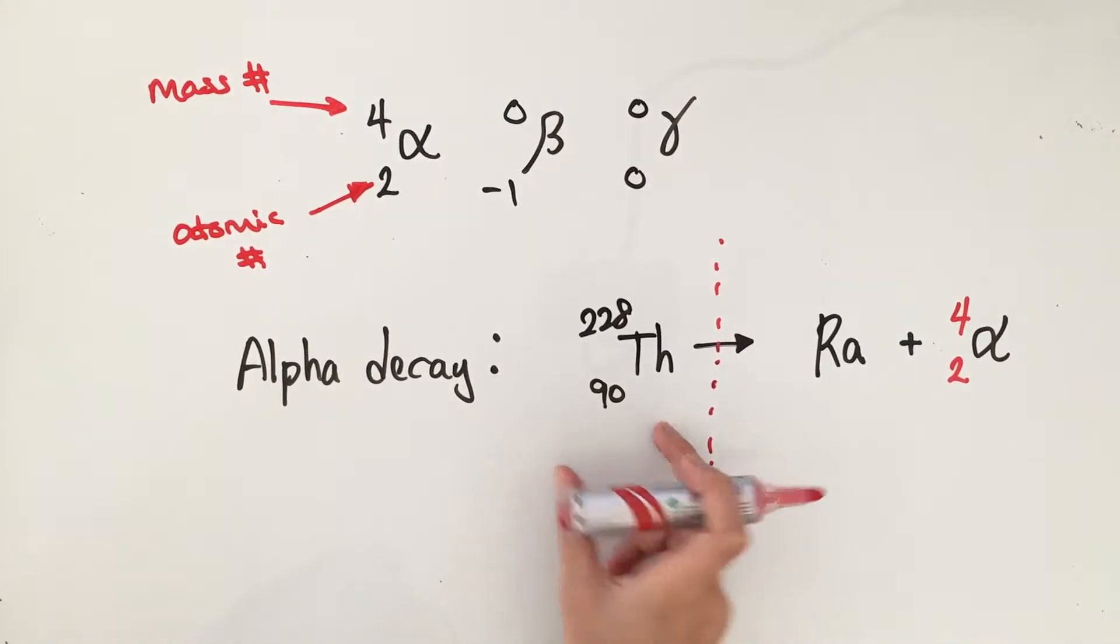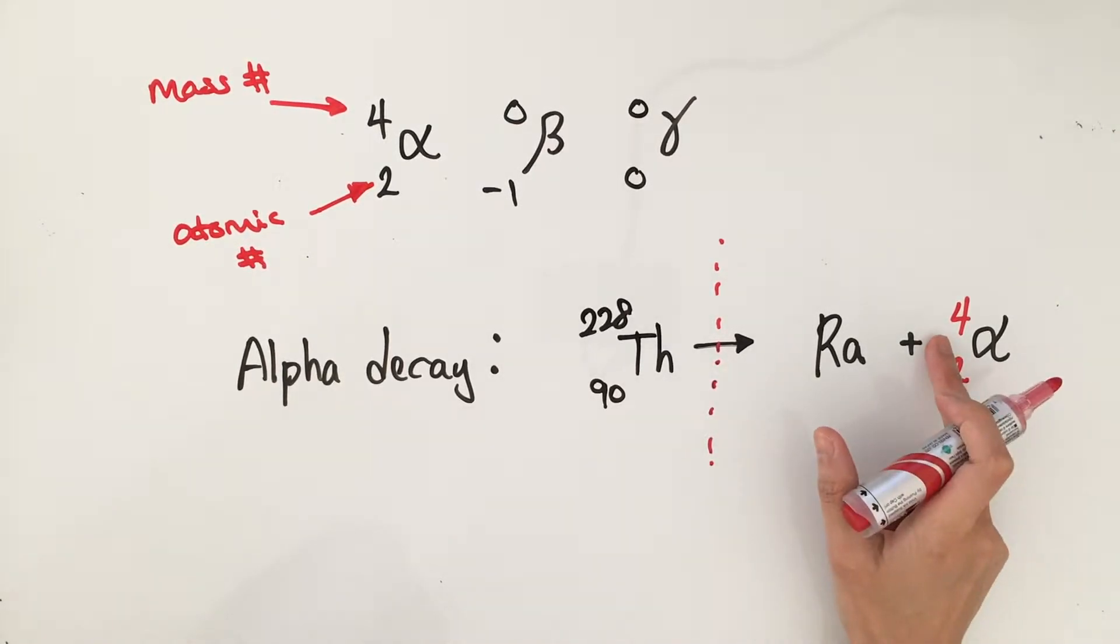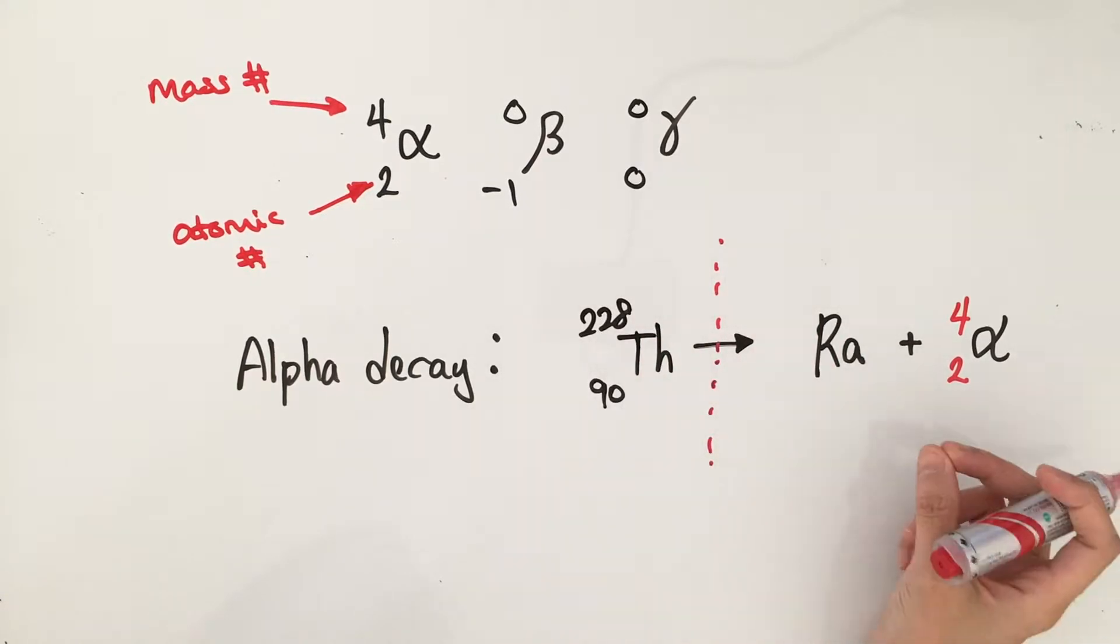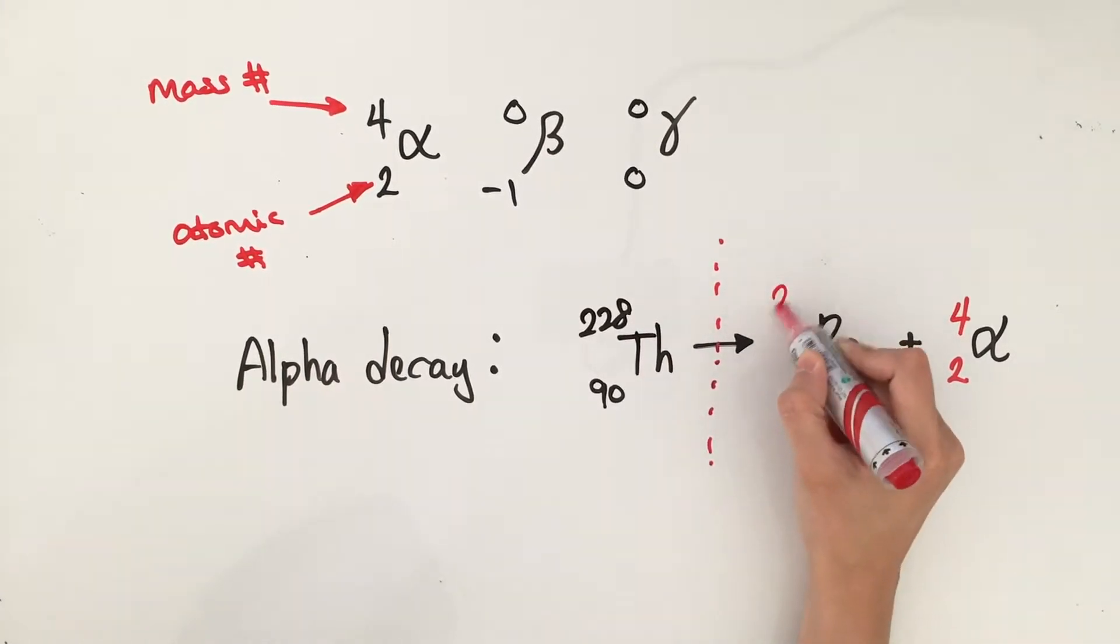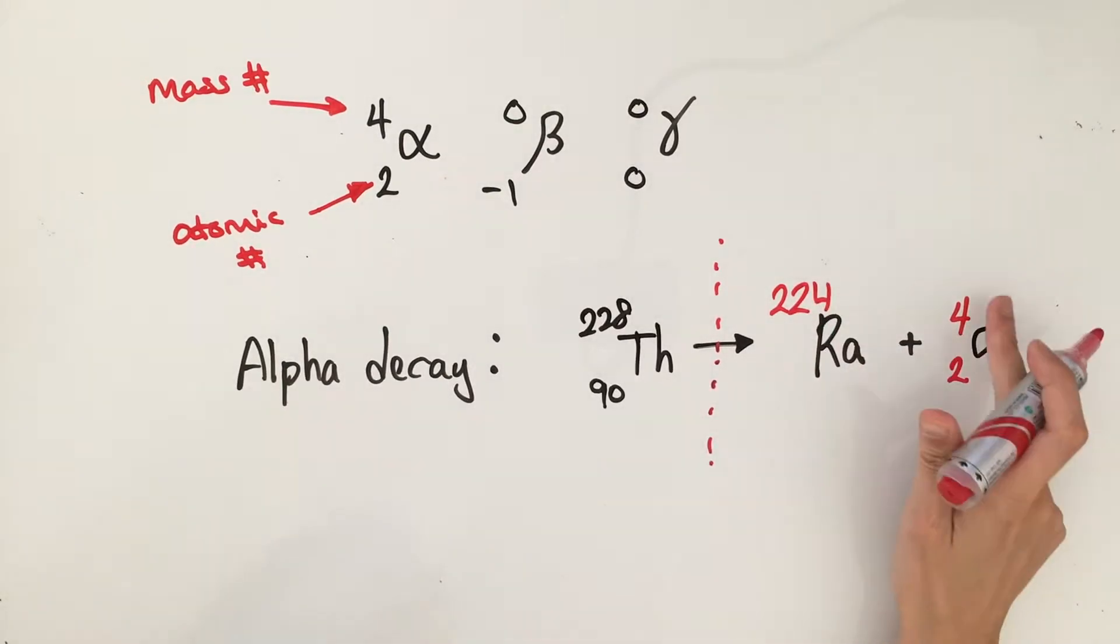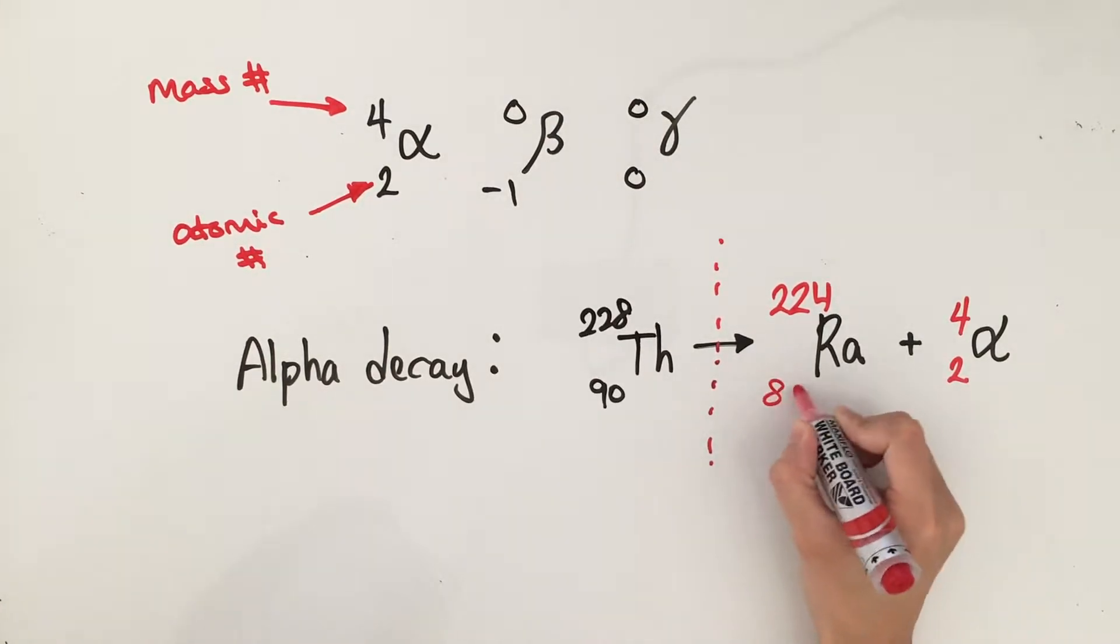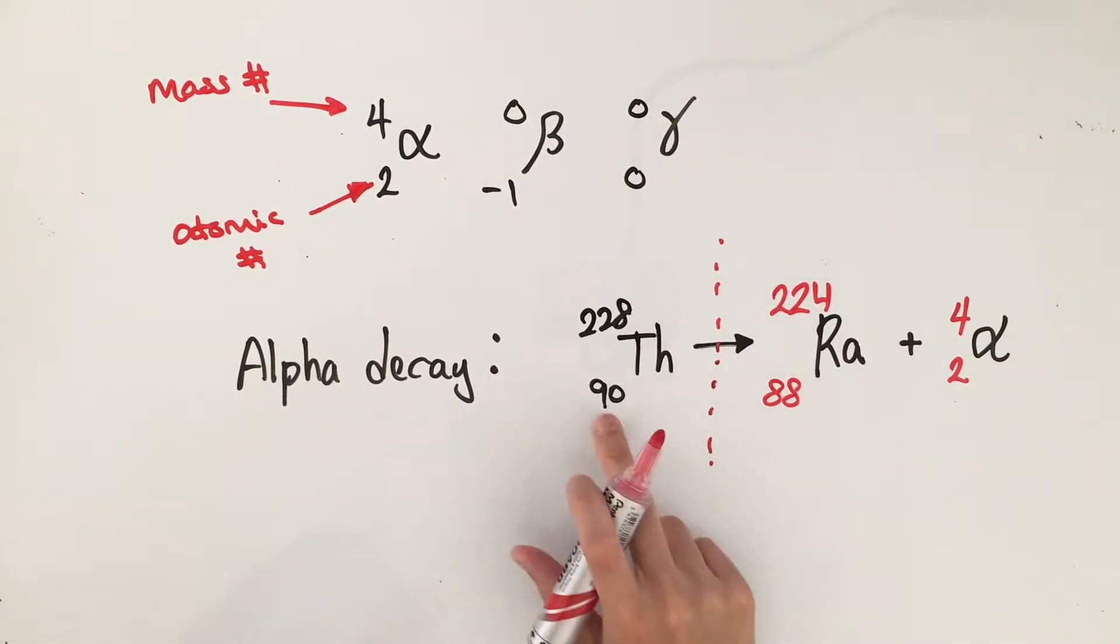You know that on the right-hand side, you need a total of 228. So we have four from the alpha particle, so what you need is 224 to make up the rest. 224 plus 4 equals 228. Do the same for the atomic number. You need 88 plus 2 to make up the 90 on the left-hand side.